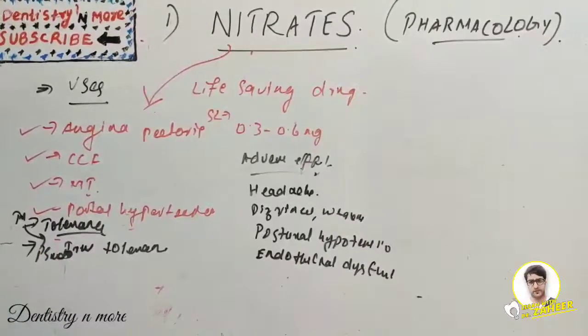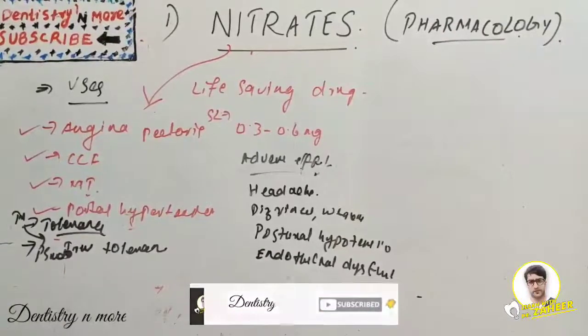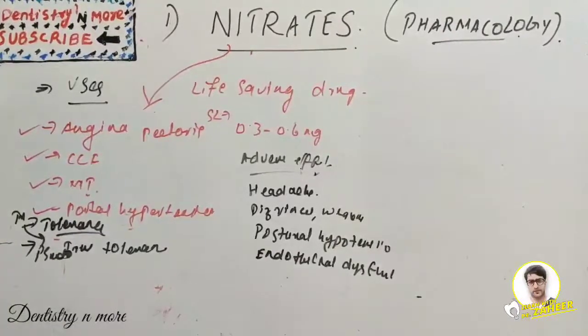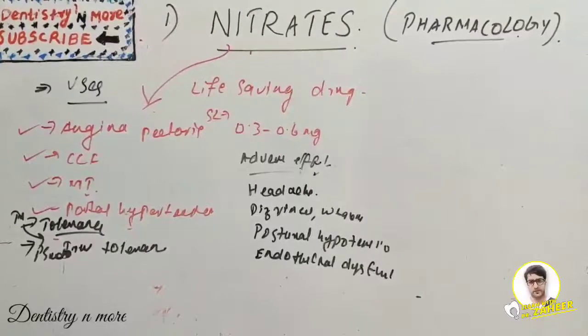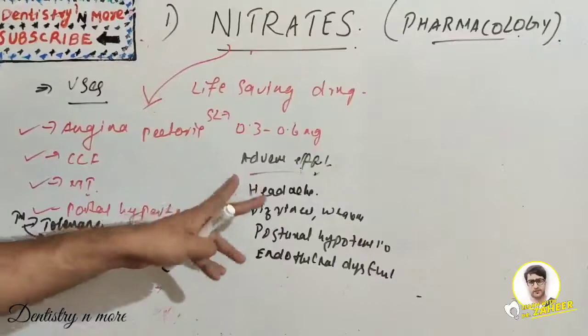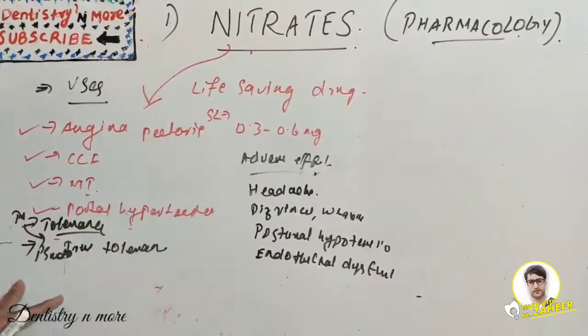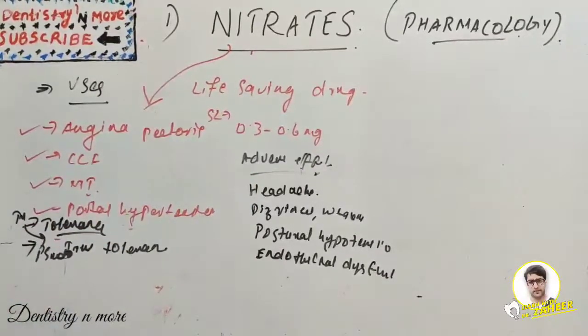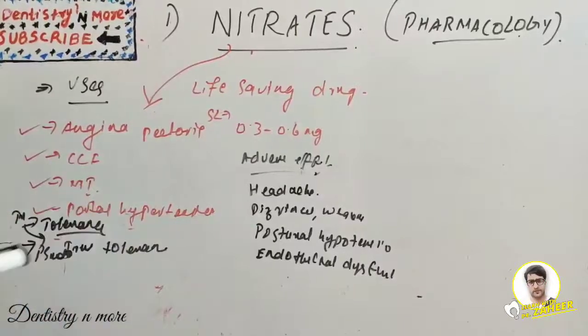That was all about nitrates - it's a very small topic, usually comes as a short note. So you can write about the prodrug and various types, its dosages, its mechanism of action, and its uses and a little bit about adverse effects and regarding tolerance.